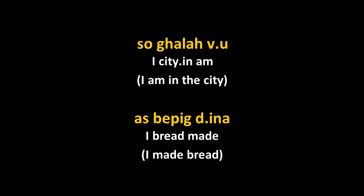As bepig dina means 'I made bread.' In this example you can see the difference between the subject in the absolutive form, so, and the subject in the ergative form, as. The pronoun 'I' is so in the basic absolutive form but as in the ergative. The verb dina is agreeing with the bread (bepig), not with the I — it does not have the V prefix you'd expect for a male subject. It agrees with the object bepig, which requires the prefix D.